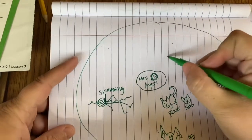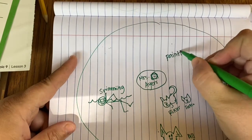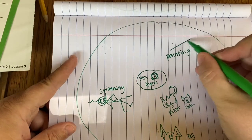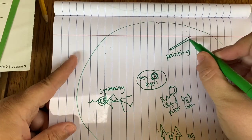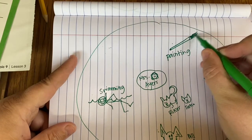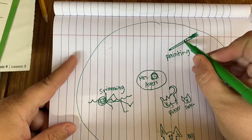I also love to paint. So I'm going to put painting. These are all things about me. You might have some things that are the same and some things that are different. I love to paint.